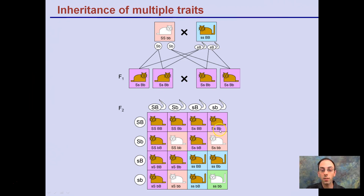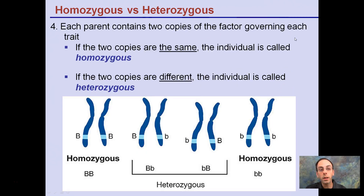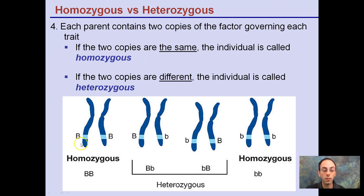Here's multiple traits — we're going to look at this when we do dihybrid crosses. We're not just like a pea plant inheriting white or purple flowers; we might be inheriting things together, and that's the point of the dihybrid cross. Each parent contains two copies of a factor governing each trait. If the two copies are the same, they're called homozygous, as in capital B, capital B.